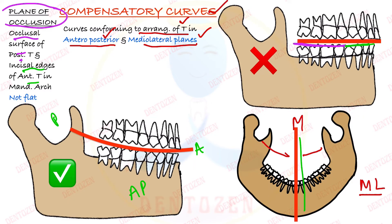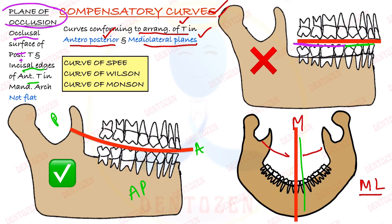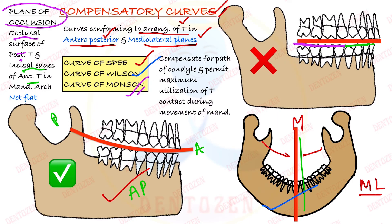There are three compensatory curves: curve of Spee, which is the anterior-posterior curve; curve of Wilson, which is the mediolateral curve; and curve of Monson. These three are called compensatory curves because they compensate for the path of the condyle so that this path is taken easily during movements of the mandible during mastication.